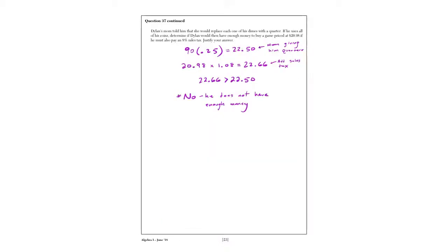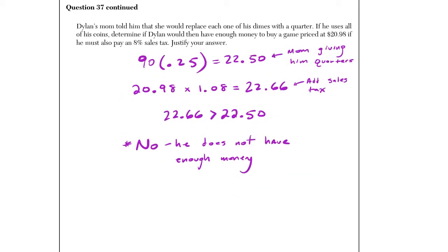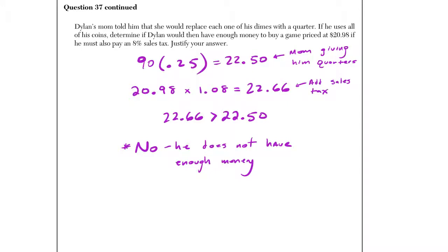And there is a follow-up. Actually involved percentages, weirdly enough. So Dylan's mom told him she would replace each of his dimes with a quarter. If he uses all of his coins, would he have enough money to buy a game that was $20.98 if he also has to pay an 8% sales tax? So first of all, if his mom gives him 90 quarters and replaces all the dimes he had, how much money is he going to have? Dude, 90 times 0.25. So that's going to be 22.50. So that's how much he has in this hypothetical situation.